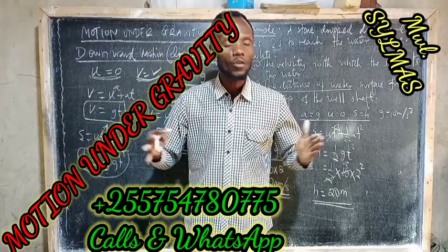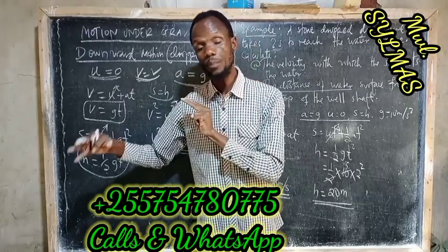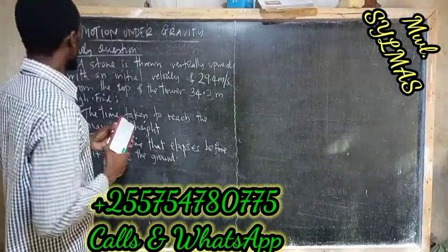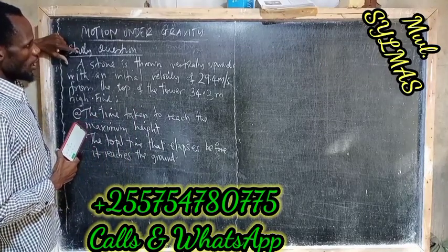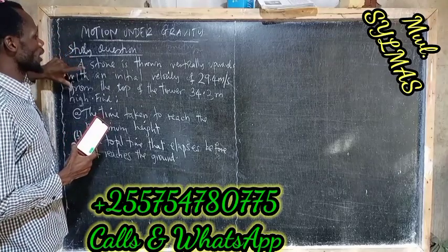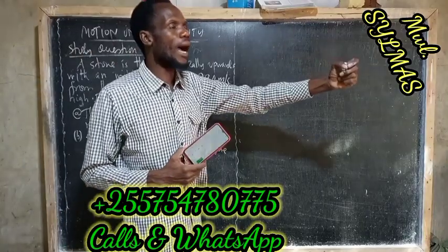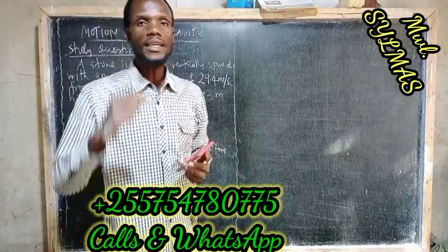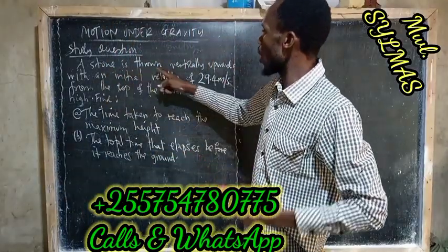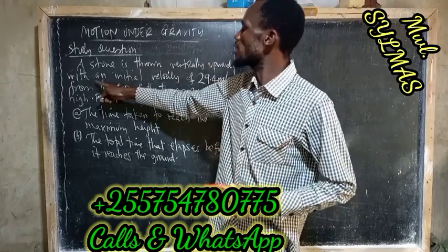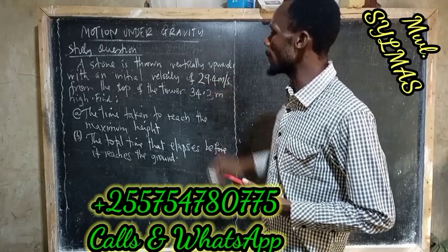Let us see an example that combines two things at the same time — that is a dropped object and a thrown object. What if your question considers both thrown and dropped objects? How does it happen? Example: a stone is thrown vertically upward with an initial velocity of 29.4 meters per second.